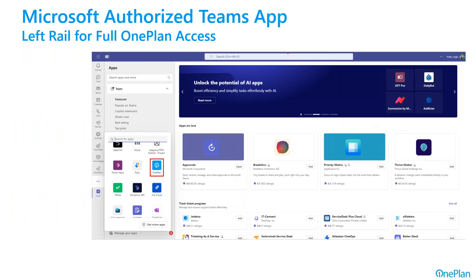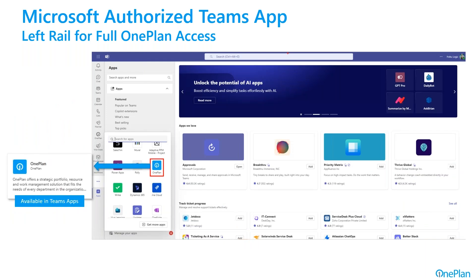OnePlan is an authorized Microsoft Teams application. If you go to add an app to your left navigation, or left rail as they often call it, it's available to you. You do have to be a subscriber to OnePlan to use it, but it is available as an authorized Teams application. It ends up being something that you can have pervasive and persistent on your left rail navigation so that you can have full portfolio management capabilities available to you at any time within Teams.